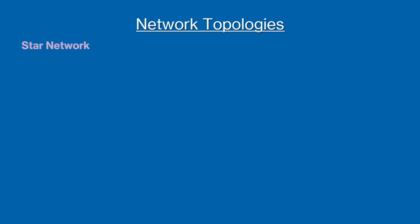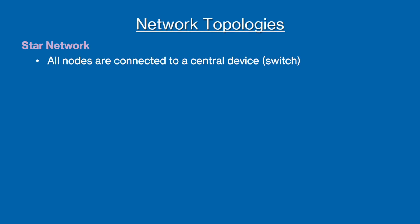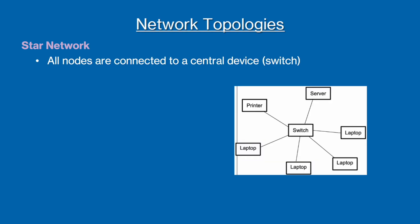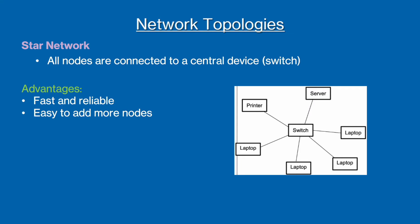The first is called a star network. This is where all the nodes are connected to a central device called a switch. Star networks tend to be fast and reliable as data collisions are less frequent. This is because each node has its own connection to the centre, so if a fault occurs in one, the other links are not affected. Also, it is easy to add more devices to a star network.